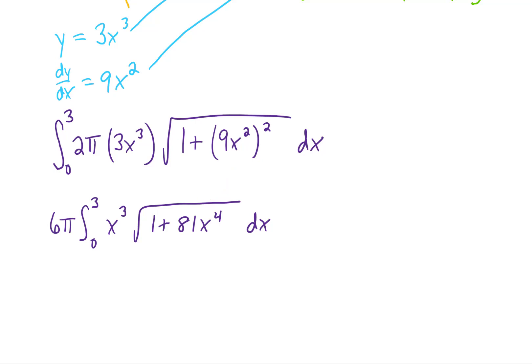This is an integral we can complete using u-substitution. I know this because if we set u equal to whatever is under the square root, our du is going to have an x³ in it. Since we have an x³ out here in our integral, I know that's going to work out.